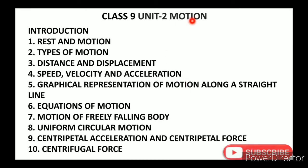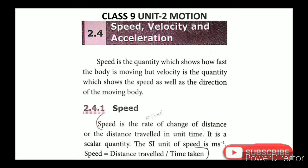Unit 2, Motion. Total in this lesson: 10 topics. Introduction, Rest and Motion, Types of Motion, Distance and Displacement — that is the third video. Speed, Velocity, and Acceleration. Speed is the quantity which shows how fast the body is moving. But velocity is the quantity which shows the speed as well as the direction of the moving body.